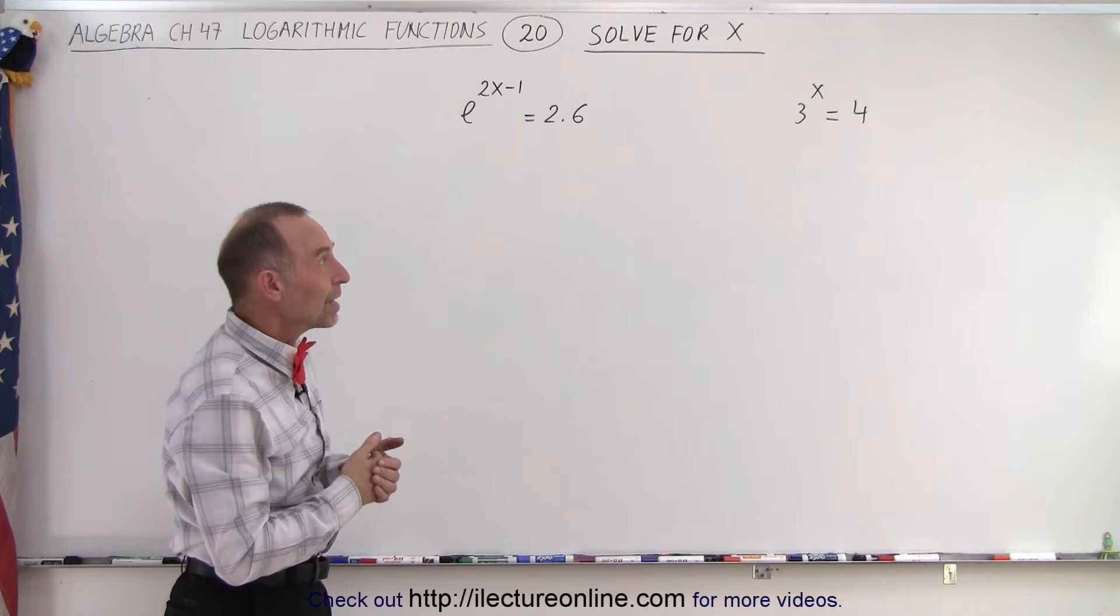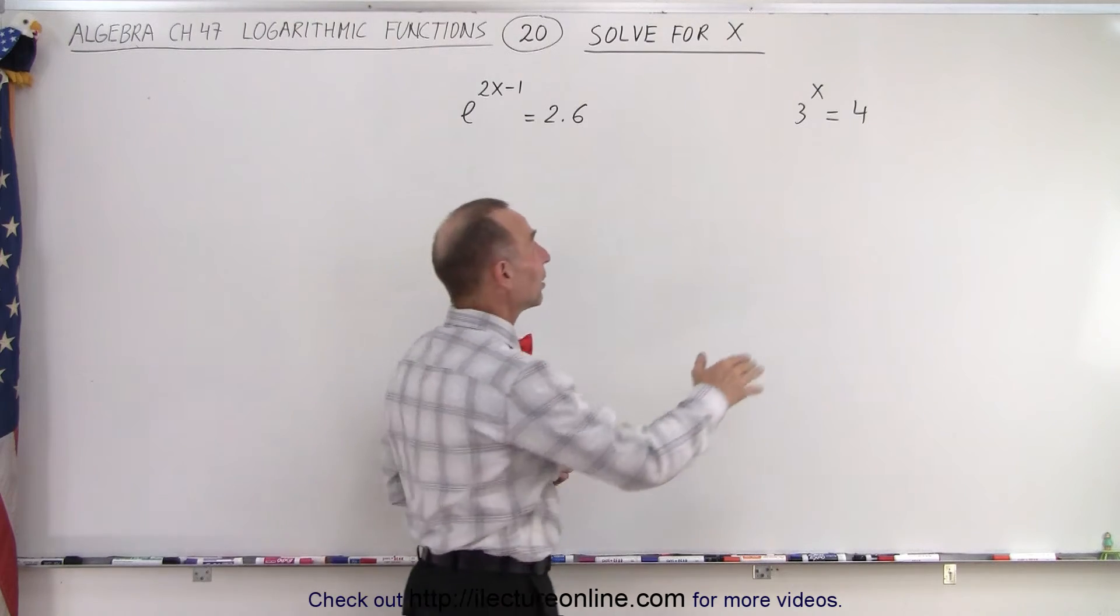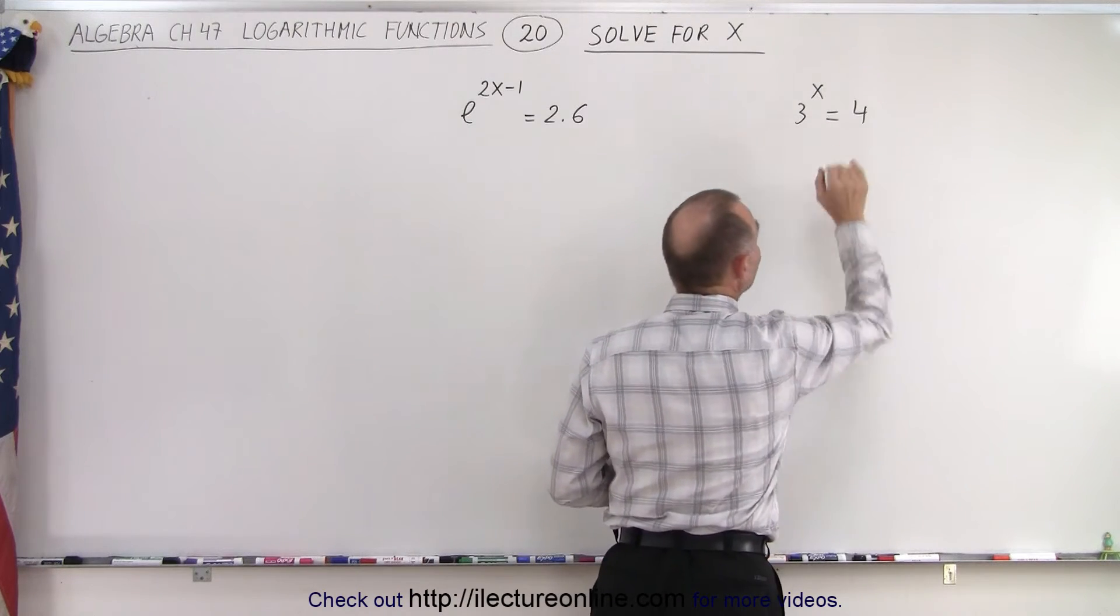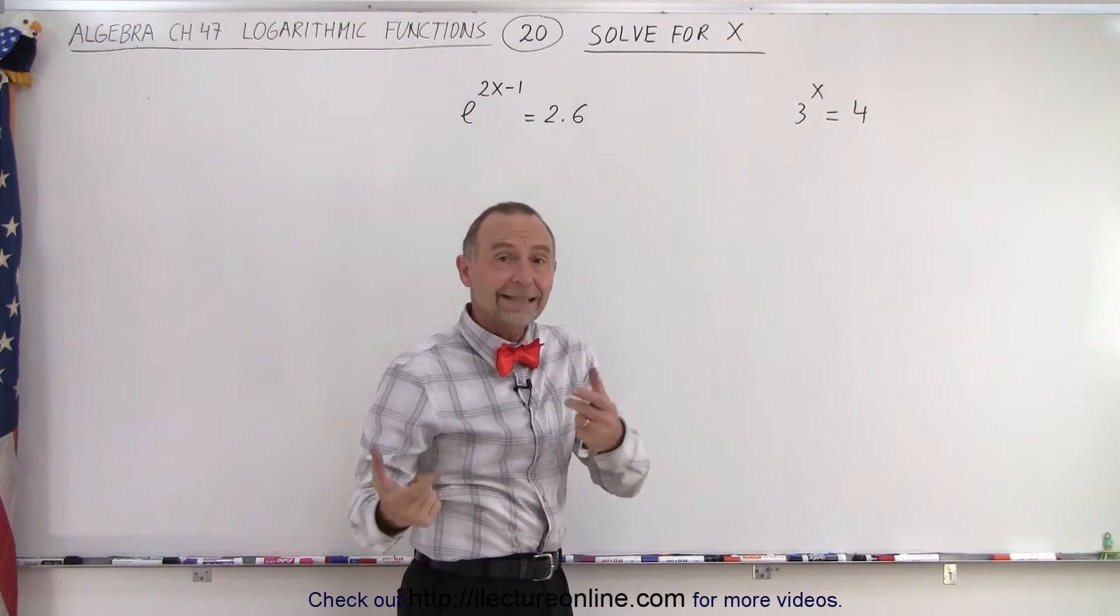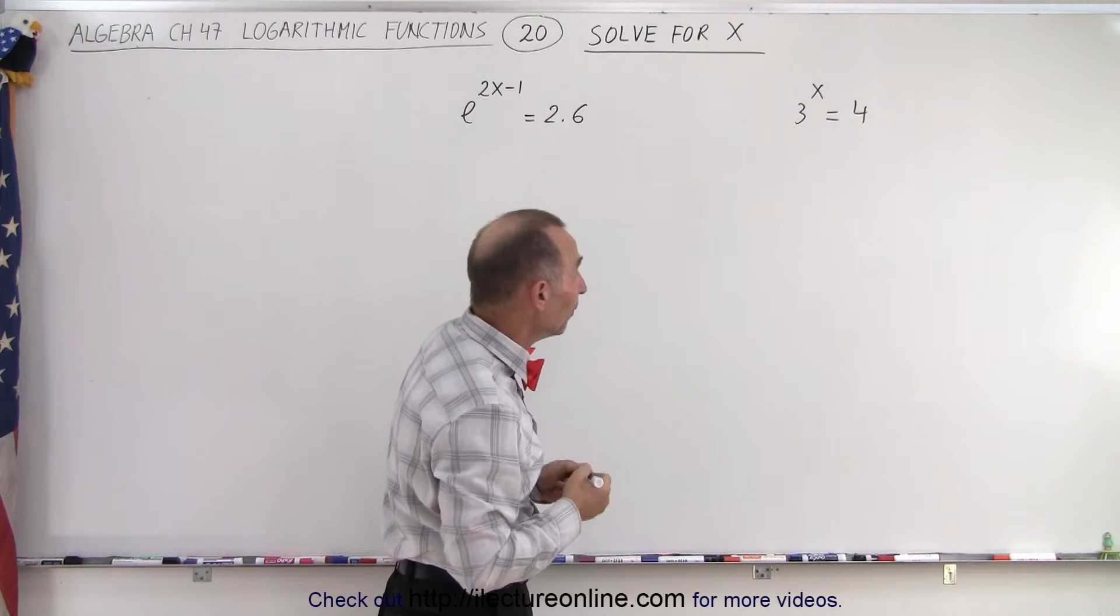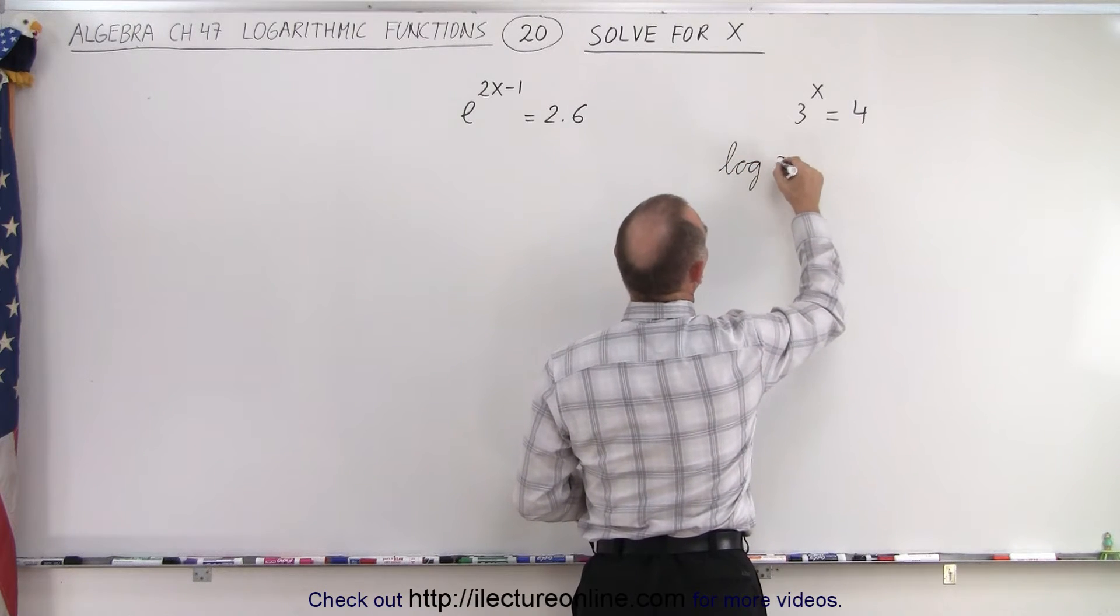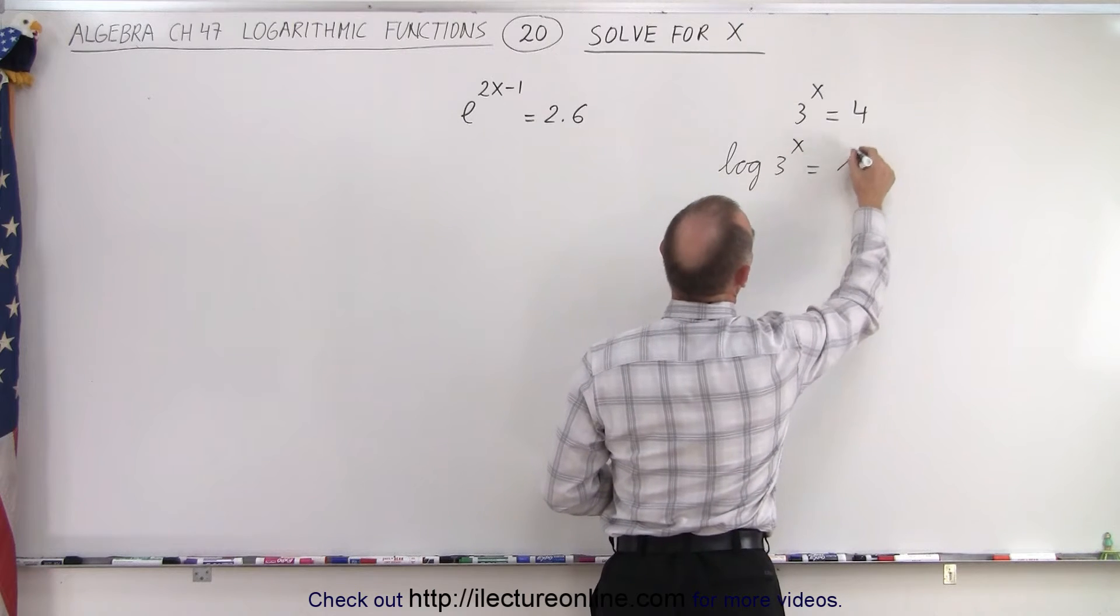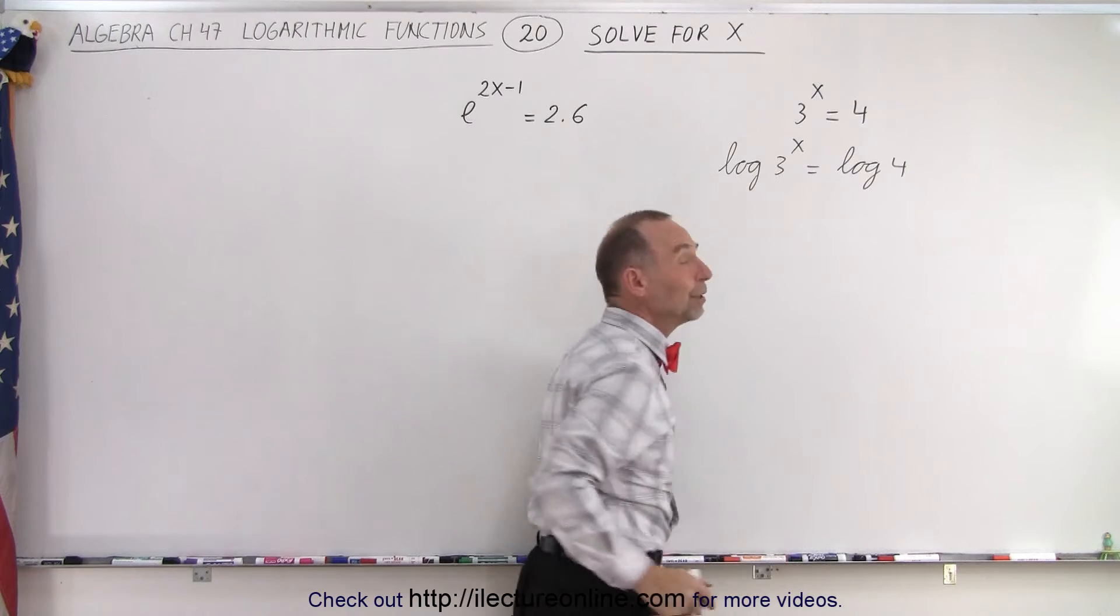What we're going to do here is take the log of both sides. If 3^x = 4 and you take the log of both sides, that equation should still be valid and equal. On the left side we write log(3^x) and on the right side we write log(4).